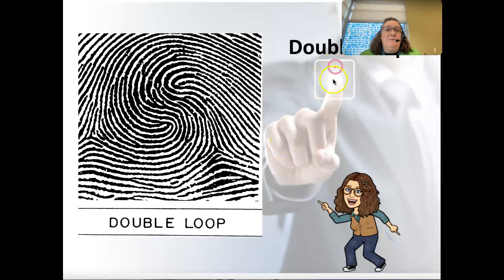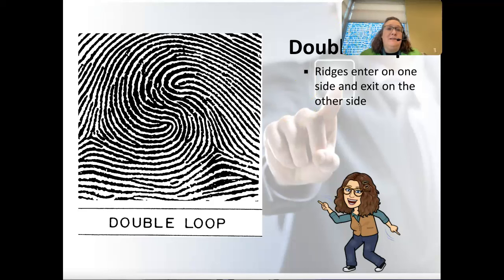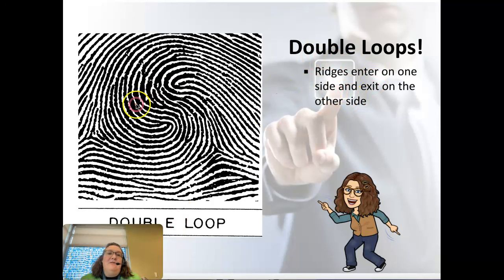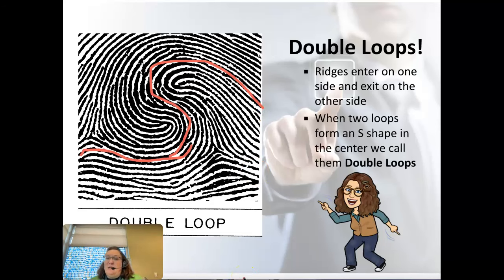Then we have double loops, which are more rare than the other two kinds. Ridges enter on one side and exit on the other. If you follow the lines, sometimes it looks like they double back, but one line continues and actually forms over on the other side, creating a weird S-shape in the middle. That S-shape is how you can identify a double loop.